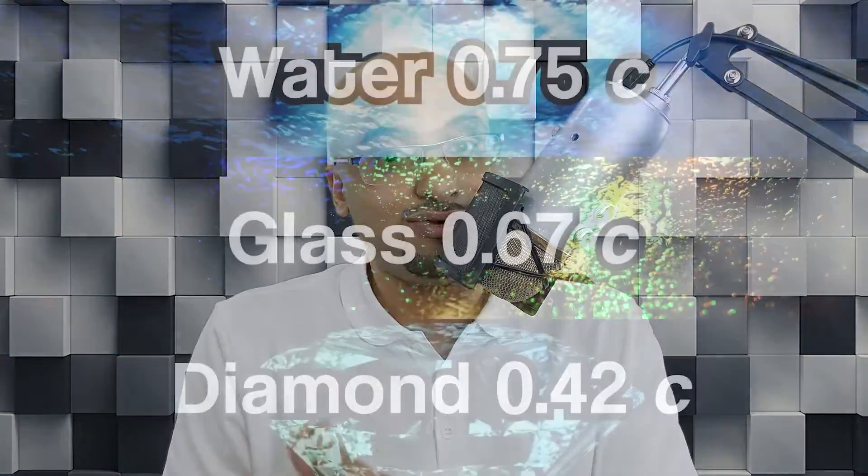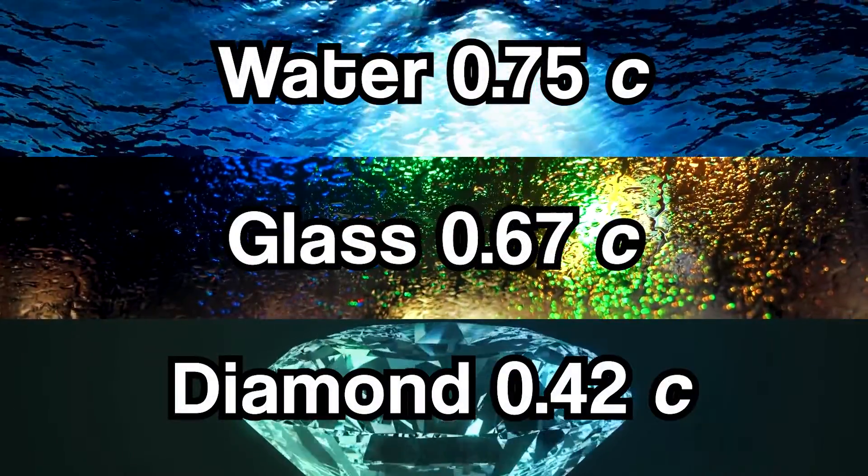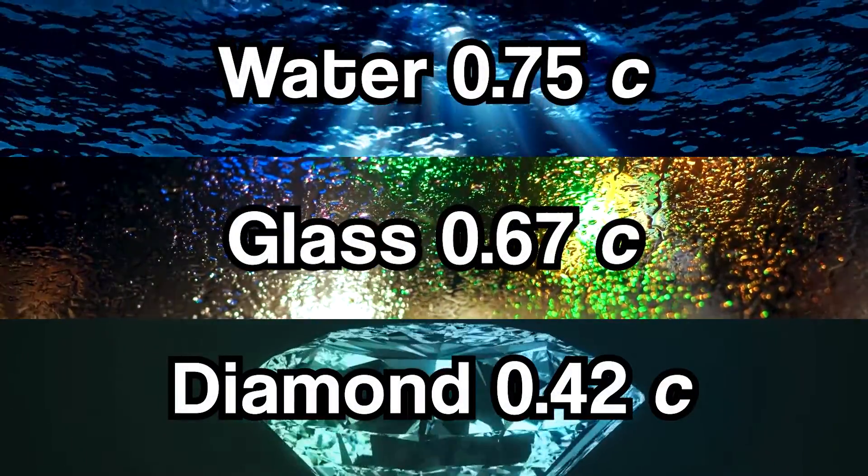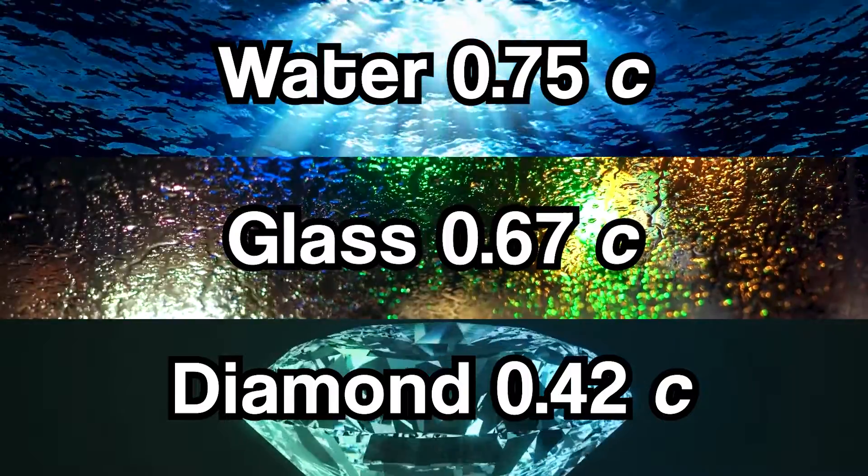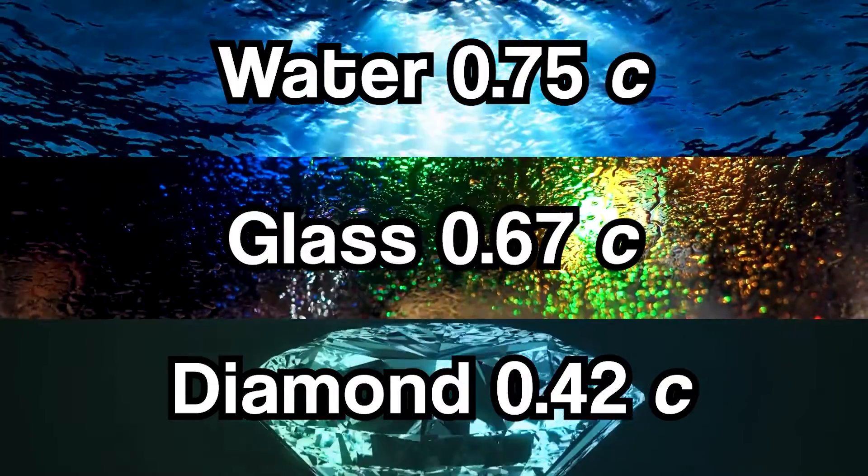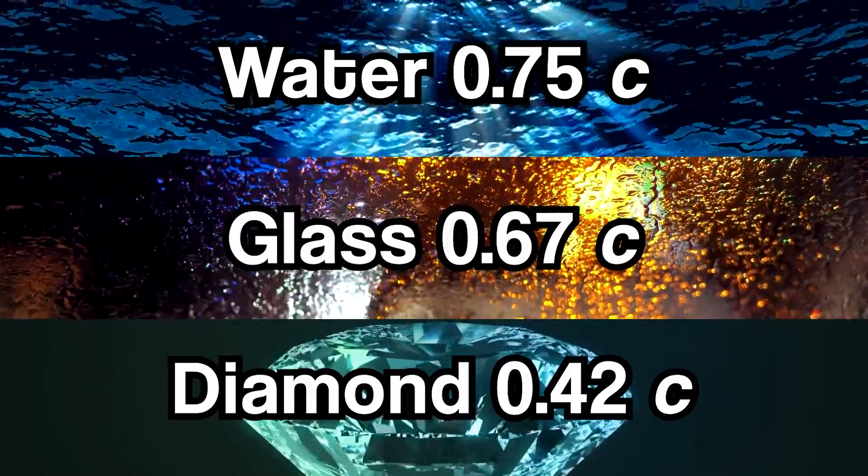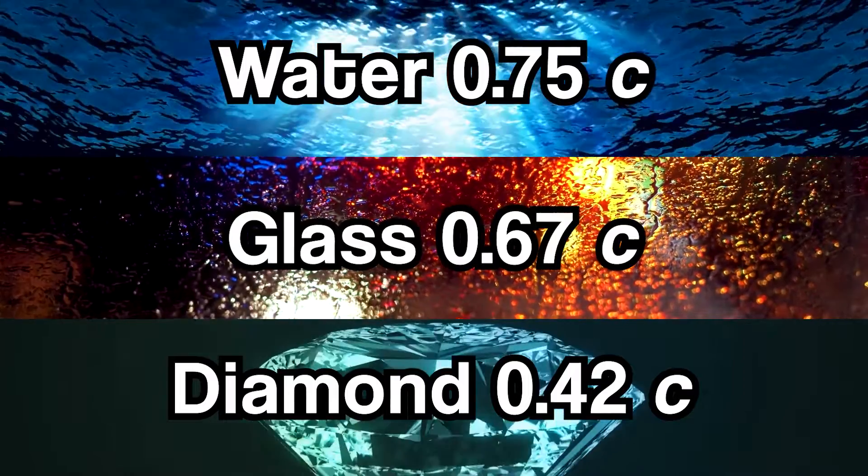And depending on the medium you're shining a light through, whether it's water, glass, diamond, whatever, the light you measure is going to be detected to be moving at different speeds. But here is where things get a bit mind-bendy: light moves at the speed of light and not at the speed of light at the same time.